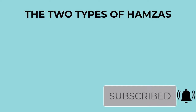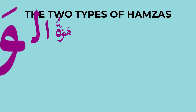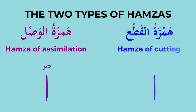There are two kinds of Hamza we are going to learn. One is called Hamzatul Wasan, the Hamza of Assimilation, and the other one is called Hamzatul Qata.